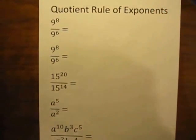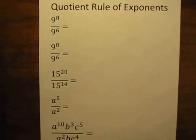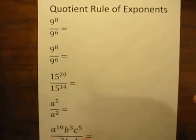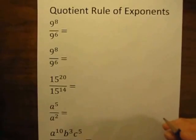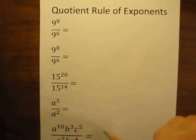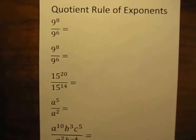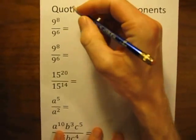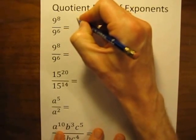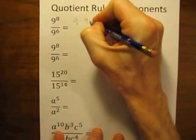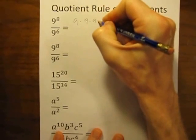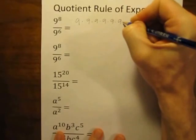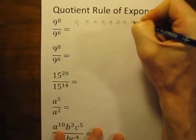In order to solve this first, before we start to use the quotient rule, I'd like to show you why it works. So let's start by writing 9 to the 8th power in expanded form. 9 to the 8th power means we're just going to multiply 9 by itself 8 times: 9 times 9 times 9 times 9 times 9 times 9 times 9 times 9.